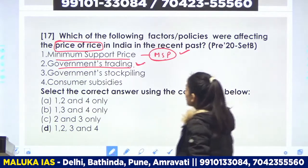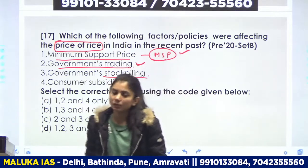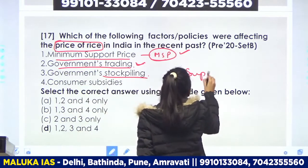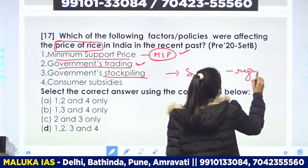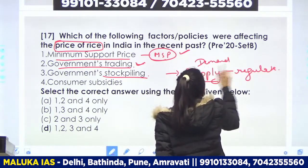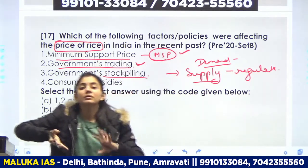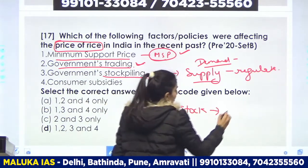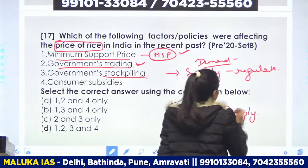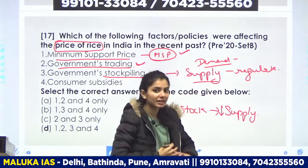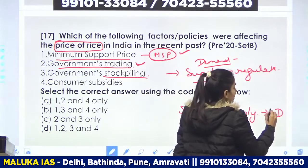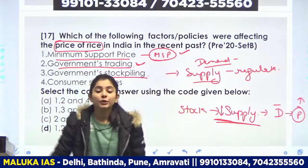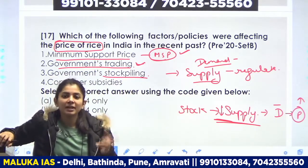Next statement: government stockpiling. Stockpiling se supply regulate hogi. Jab supply regulate hogi, demand-supply system ek tarike se controllable ho jaayega. Stockpiling ho rahi hai — that means supply control ho rahi hai. Market mein supply ko control kar rahe hain — ya toh supply ko kam kar rahe hain, apne paas stock kar rahe hain. Jab apne paas stock kar rahe hain, toh demand utni hi hai, supply kya hai — woh kam ho gayi. Toh isse price kya hoga — price badhega. Jab supply kam hai, demand utni hi hai, price is increased.